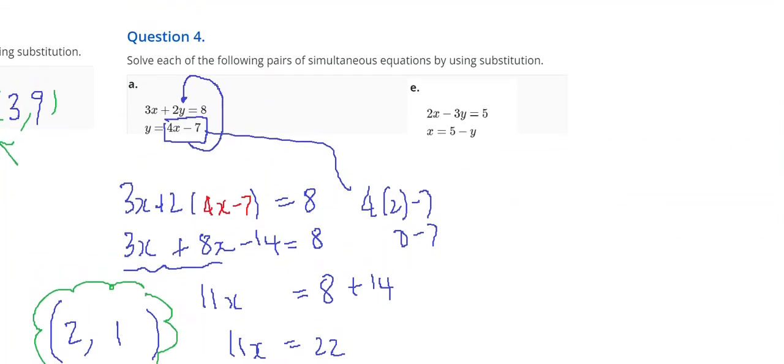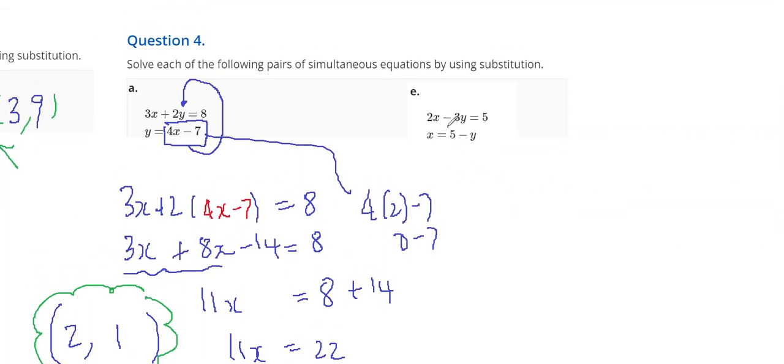And the last example out of question 4, I can see that x equals 5 minus y. So, I'm going to replace the x in the first equation with 5 minus y instead.